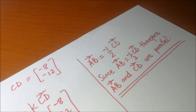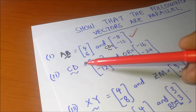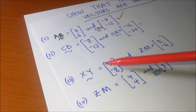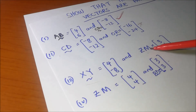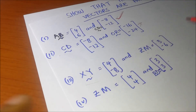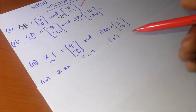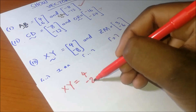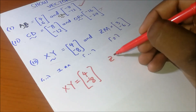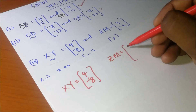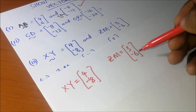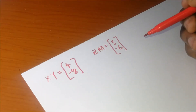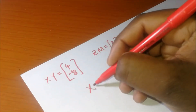Let me do example 3. We have vectors XY and ZM, and we need to show that these two are parallel. Vector XY is equal to (4, -8) and vector ZM is equal to (3, -6). We are supposed to show that those two are parallel.